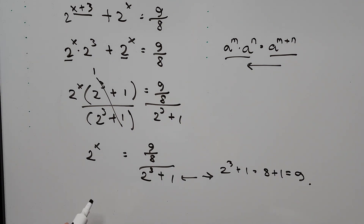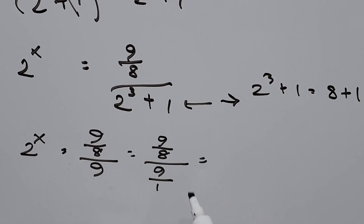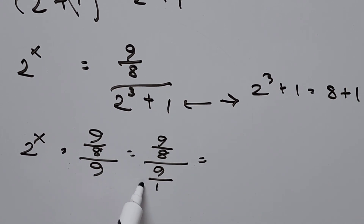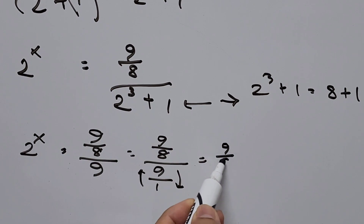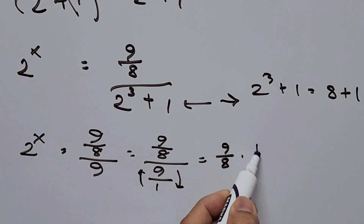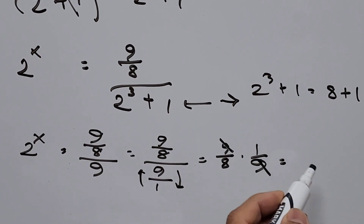The equation now becomes 2 to the power of x equals 9 over 8, all divided by 9. This can be written as 9 over 8 divided by 9 over 1. Replacing division with multiplication and taking the reciprocal, we get 9 over 8 times 1 over 9. The 9s cancel, and the answer is 1 over 8.